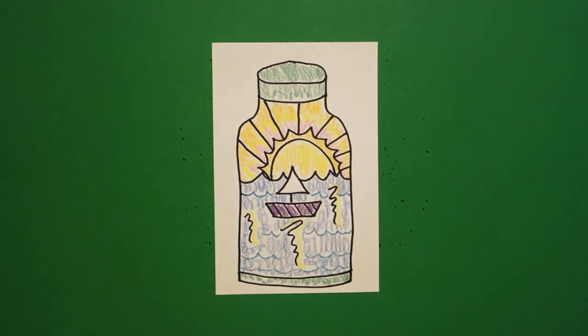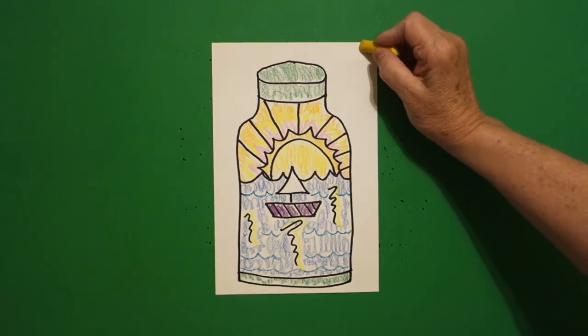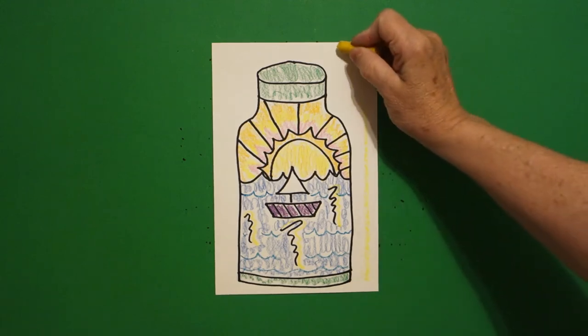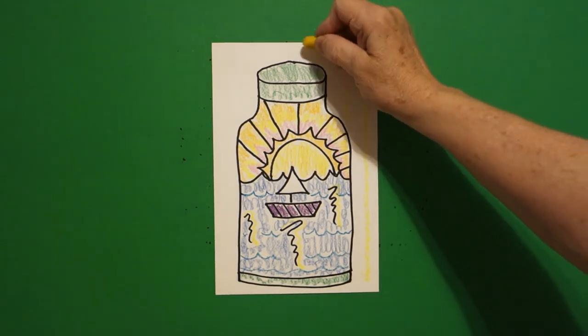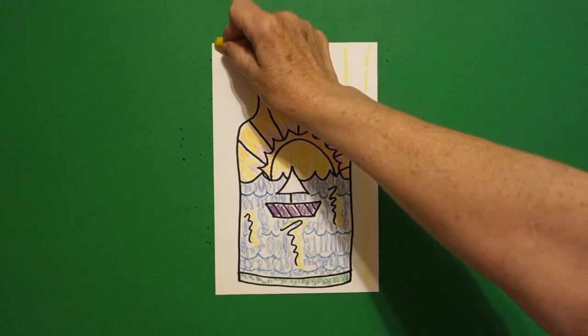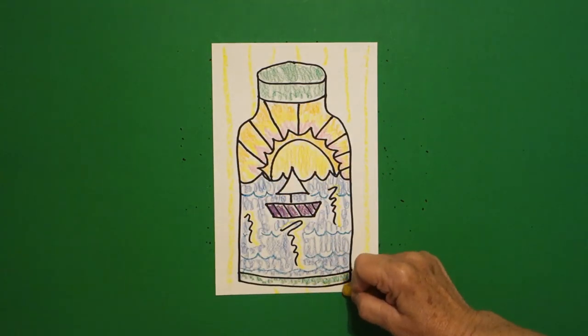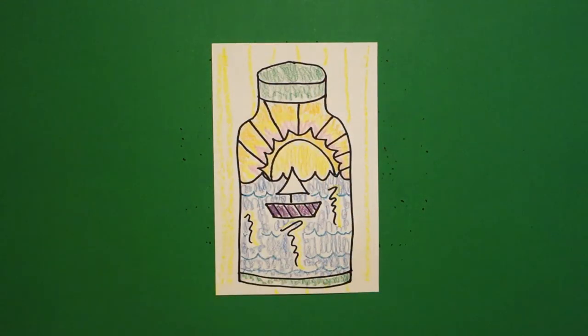Last thing, I'm going to take my fat yellow crayon and I'm just going to do some stripes in the background.